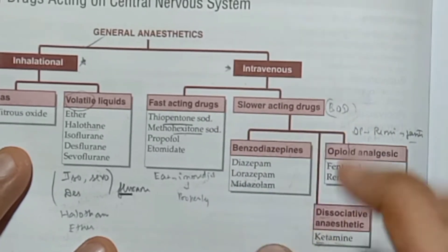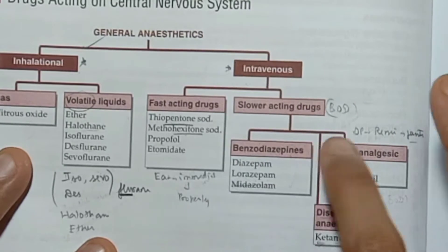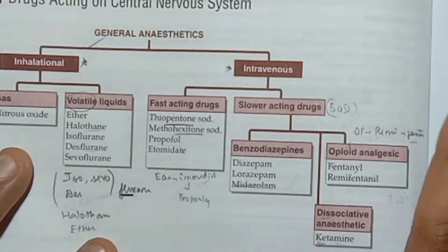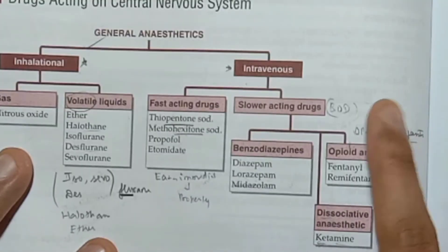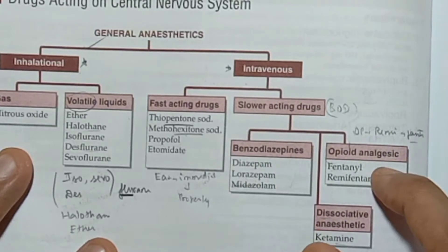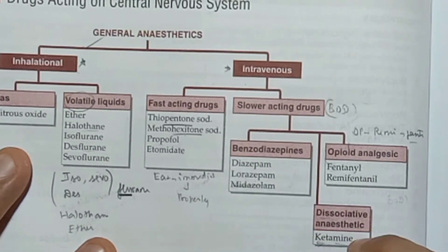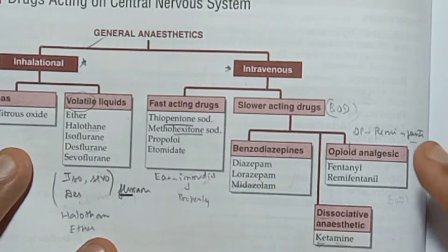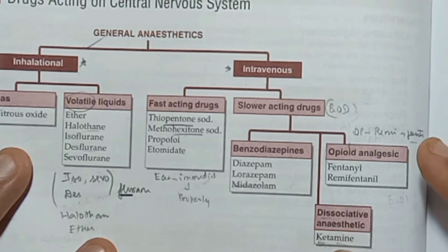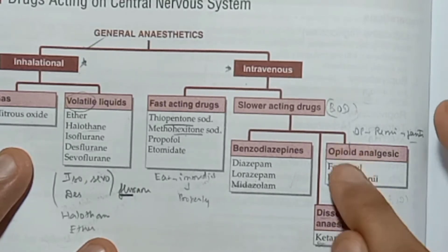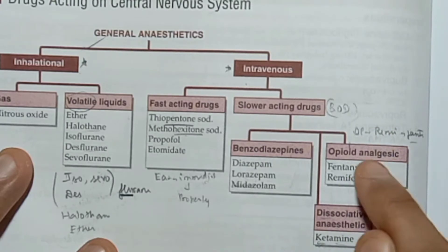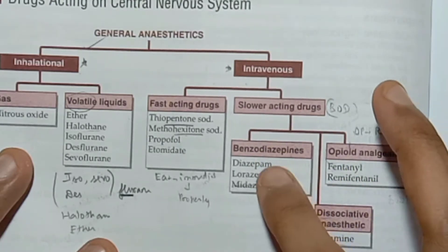In slow-acting, it is divided into three categories: benzodiazepines, dissociative, and opioids. The dissociative agent is ketamine. Opioids include remifentanil and fentanyl. Benzodiazepines include lorazepam.